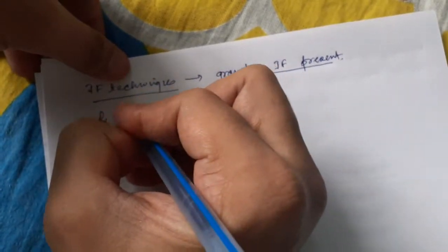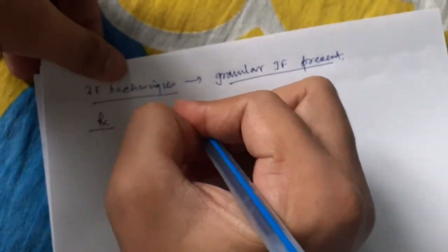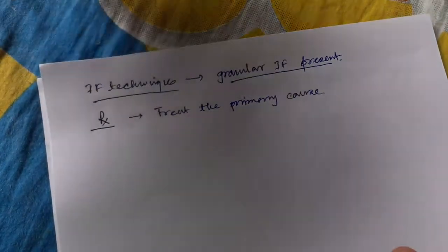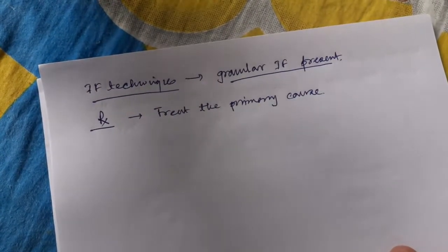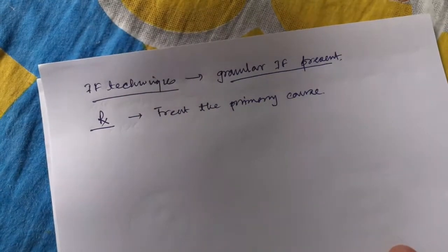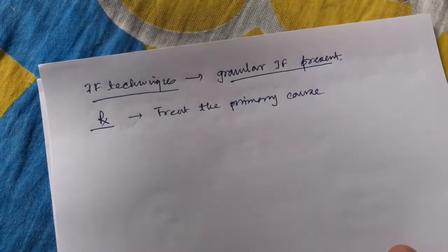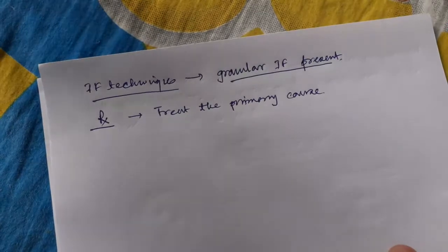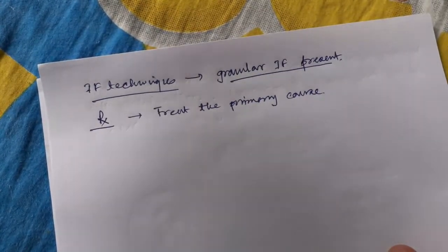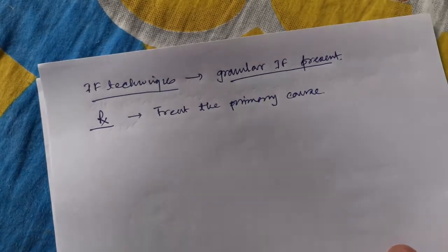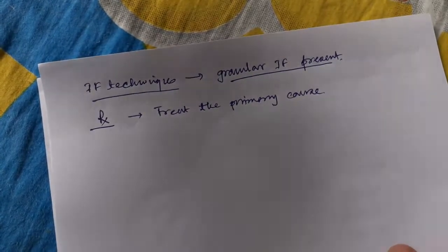What is the treatment for type 2 RPGN? Treat the primary cause. It is secondarily associated with the diseases SLE, IGA nephropathy, and HSP disorder. So you should treat the primary disease — SLE, IGA nephropathy, or HSP — and after treating the primary disorder, the RPGN is automatically cured.